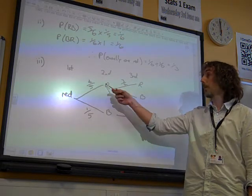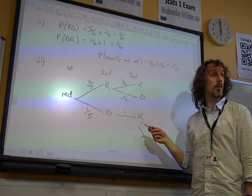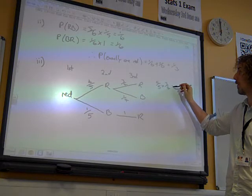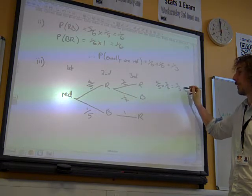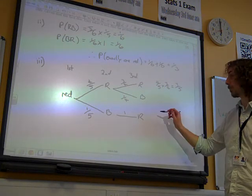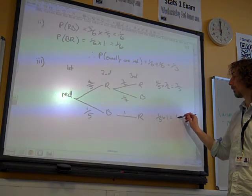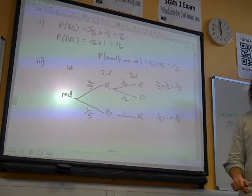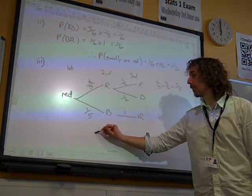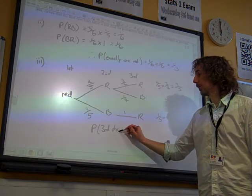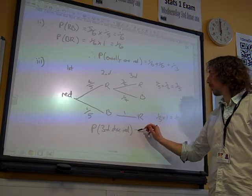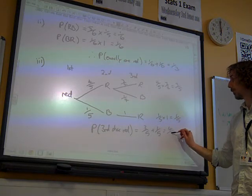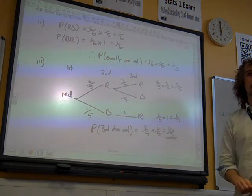Well, that would happen if we followed this branch or if we followed this branch. This branch here is four-fifths times three-quarters, which is three-fifths. And this branch is one-fifth times one, which is one-fifth. So the probability that the third disc was red is three-fifths plus one-fifth, which is four-fifths.